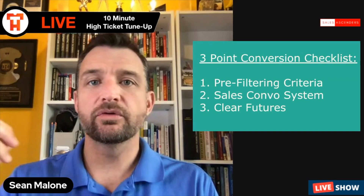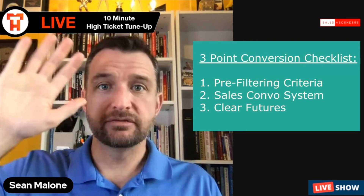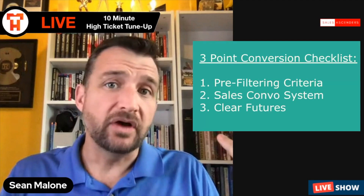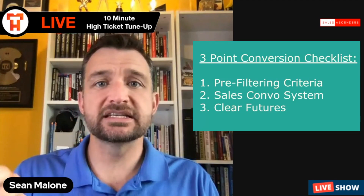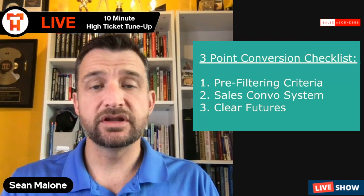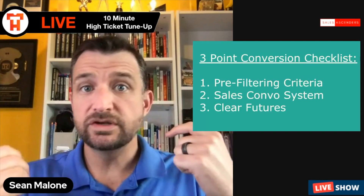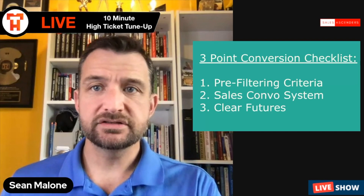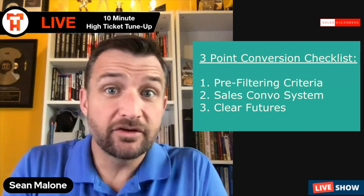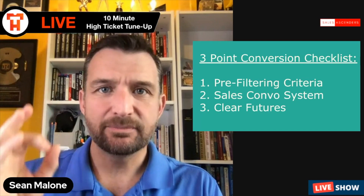Good in equals good out, poop in equals poop out. So we've got to have some sort of pre-filtering criteria on who we're talking to. This is one of the reasons why organic attraction marketing falls on its face. Somebody makes a hand raiser post, people comment, like, and share — but there's no filter on who is responding unless you put it into the system in the first place. The people commenting, liking, and sharing might not be the exact person you're looking for.